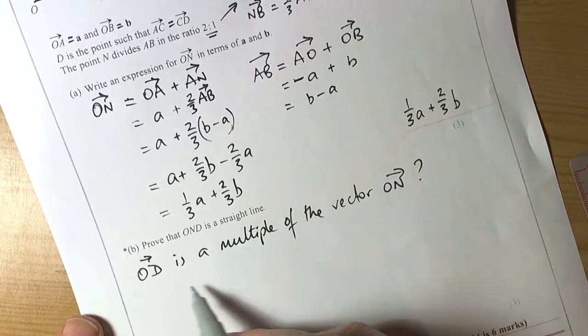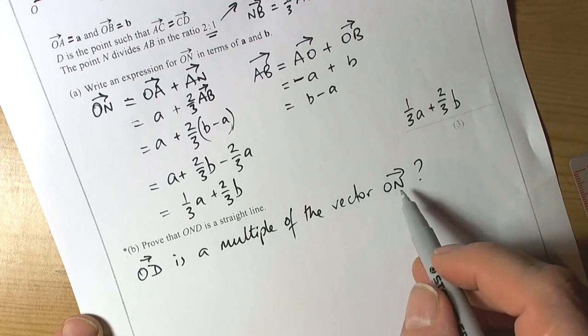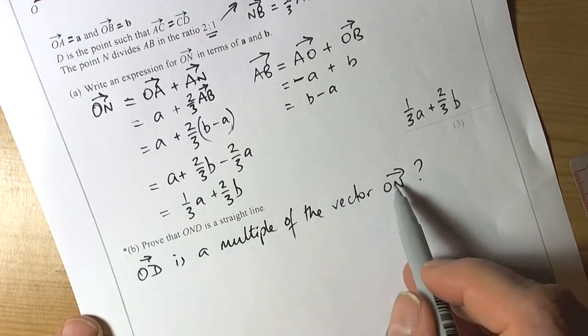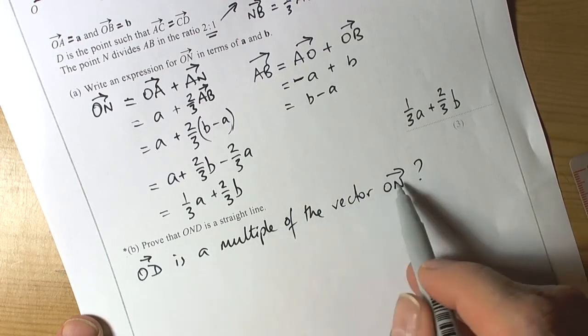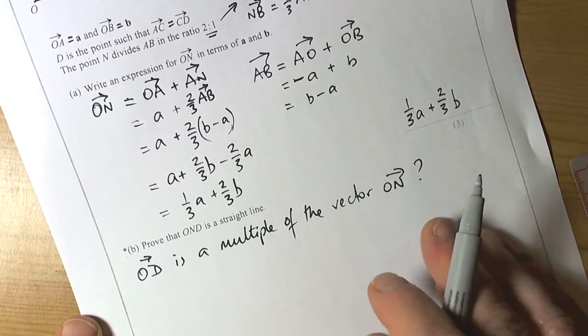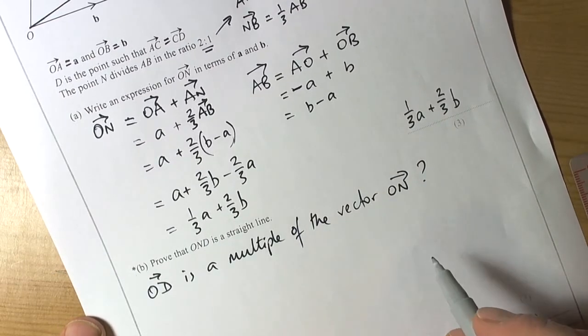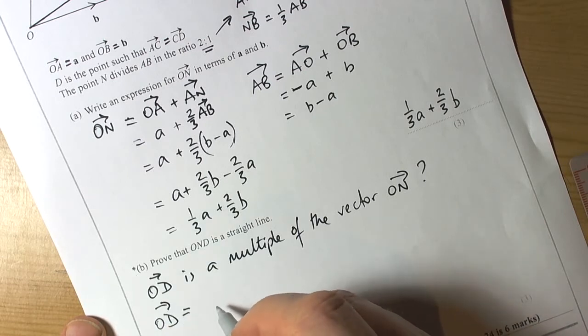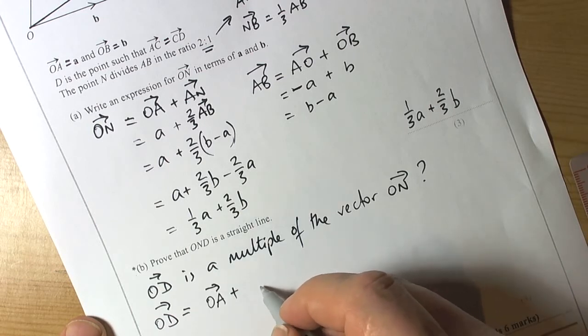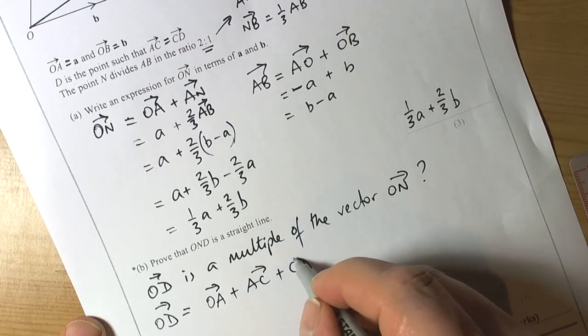What I need to prove is that the vector OD is a multiple of the vector ON. If I can show that's true, then we know the two vectors are parallel. And because they both start at the common point O, then they're parallel and with a common point, therefore they're collinear in a straight line. So I need to work out the vector OD. OD is equal to OA plus AC plus CD.